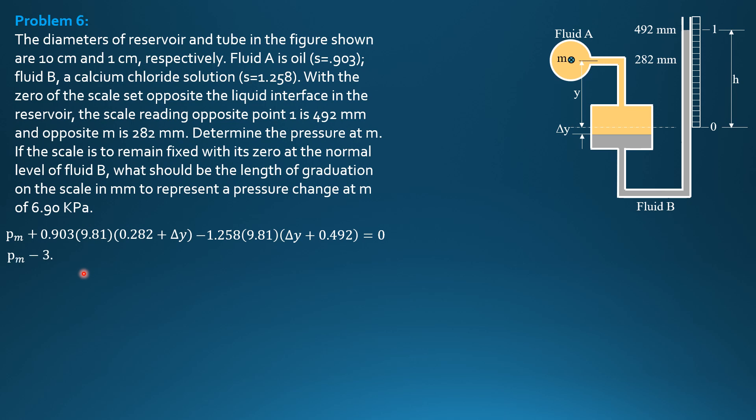That's 0.903 times 9.81 times 0.282 minus 1.258 times 9.81 times 0.492. Then for delta Y, 0.903 times 9.81 delta Y minus 1.258 times 9.81 times delta Y. Let's leave that as our first equation.